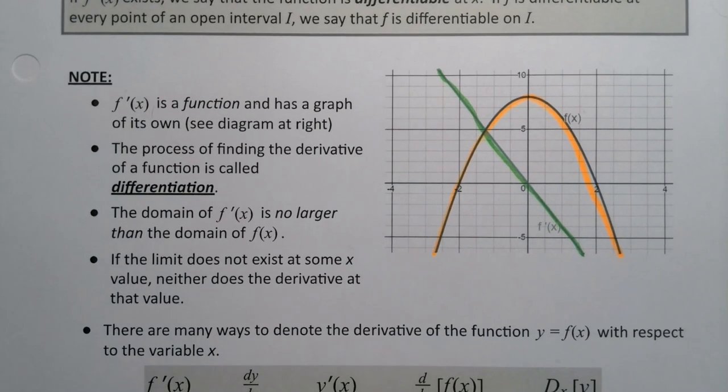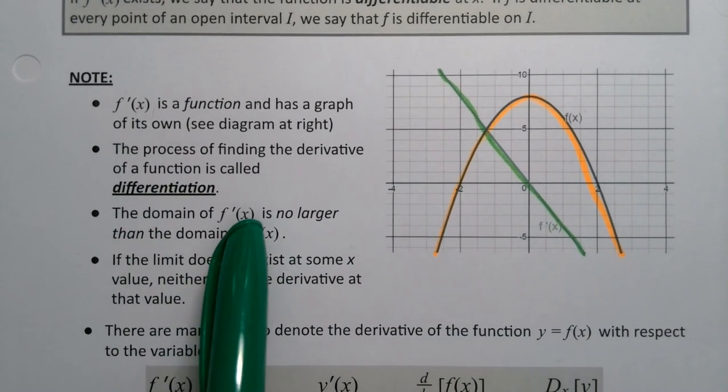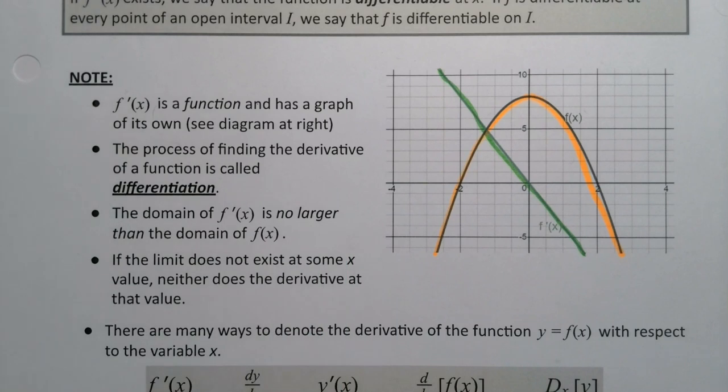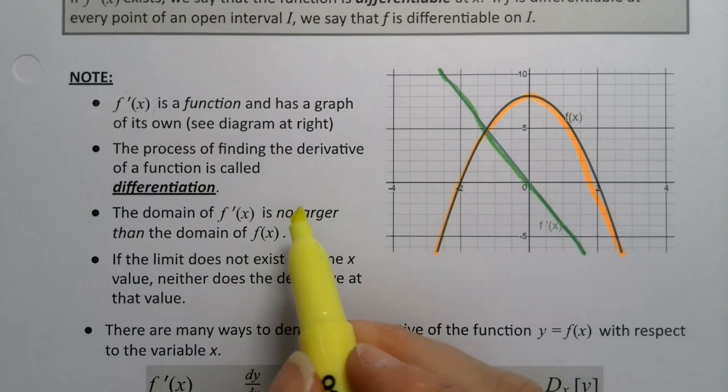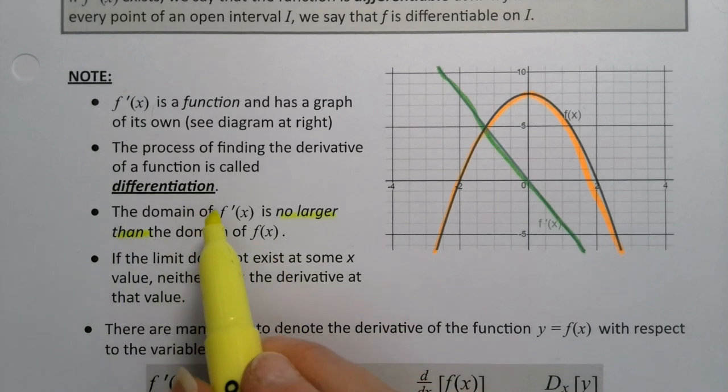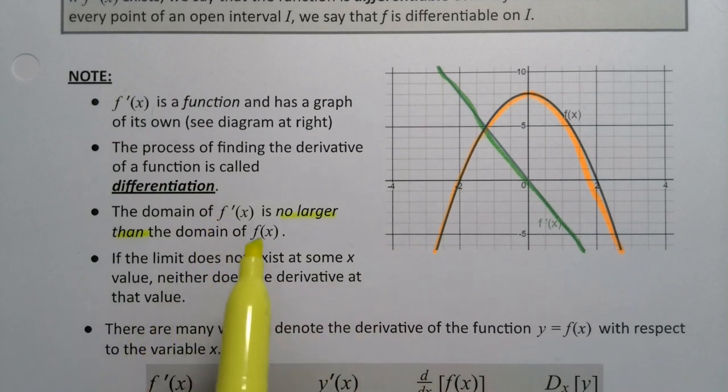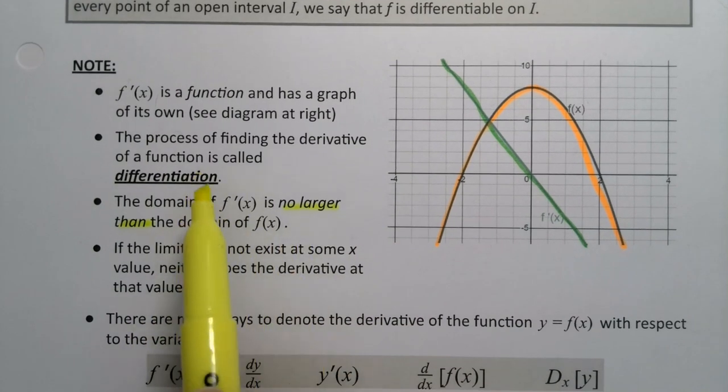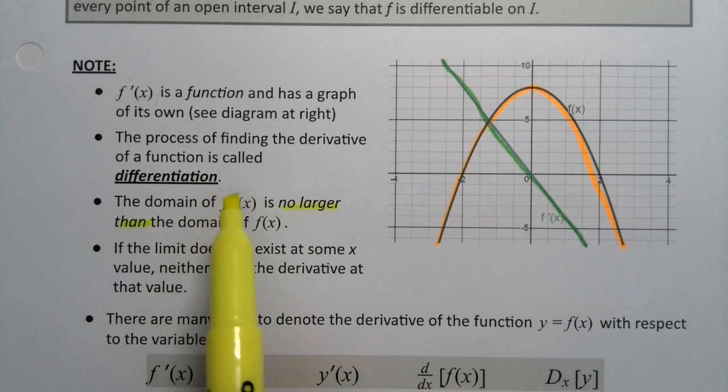Now the domain of f' is no larger than the domain of f. So first of all, the domain of f: if there's a value for which the function does not exist, then the derivative definitely does not exist. But then it's possible that the derivative does not exist even if the function did.